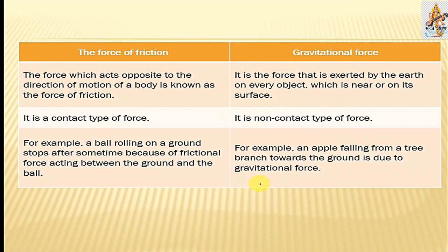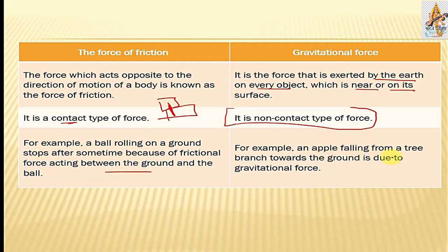The force of friction and gravitational force. The force which acts opposite to the direction of motion of body is known as friction of force. Gravitational force is a force that is exerted by the earth on every object which is near or on its surface. Force of friction is contact type - two equipment must be in contact. But with gravitational force, it should not be contact, it can be a non-contact type of force. Example: A ball rolling on a ground stops after some time because frictional force acting between ground and ball. An apple falling from a tree branch towards the ground is due to the gravitational force.